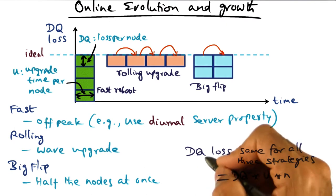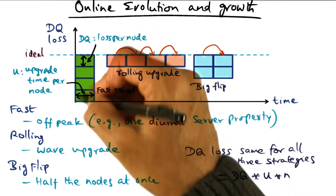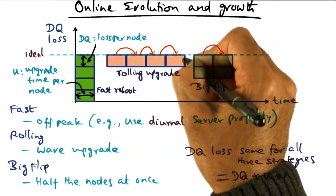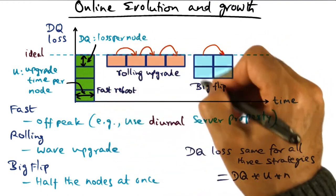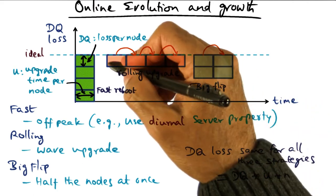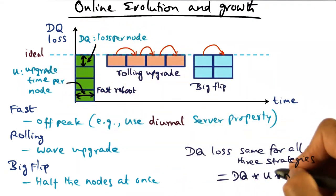But there is no way to hide the DQ loss. And you'll see that the DQ loss, which is shown by the area of the shaded rectangle in each one of these cases, the area in the shaded rectangle is exactly the same. In other words, the DQ loss is the same for all three strategies, and it is the DQ loss of an individual node, the upgrade time for an individual node, and the number of servers n that you have in your server farm. That's the total DQ loss for online evolution.